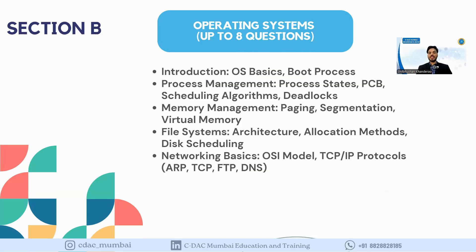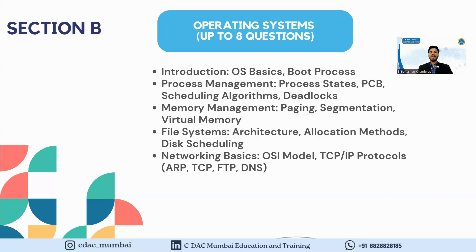In Process Management we can expect questions like what is a process, process lifecycle and states, the process control block and its roles. We can also expect questions on scheduling algorithms such as First Come First Serve (FCFS), Shortest Job Next (SJN), priority scheduling, and round robin. Then for deadlock, we can expect questions on what a deadlock is, the conditions for deadlock such as mutual exclusion and hold-and-wait, how to avoid it, and how to recover from a deadlock.